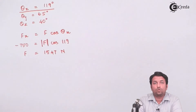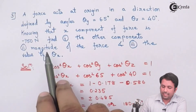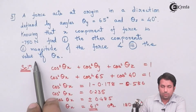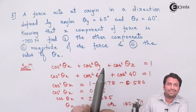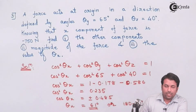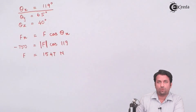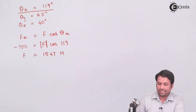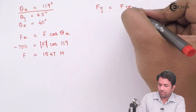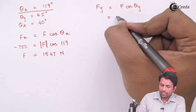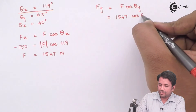This is the magnitude of the force. I have now completed the second part — finding the magnitude and the angle along x. What remains is finding the other components F_y and F_z. Since we have the magnitude, we use F_y = F·cos(theta_y). The magnitude is 1547 newtons and the angle is 65 degrees. Similarly, F_z = F·cos(theta_z) using the 40-degree angle.